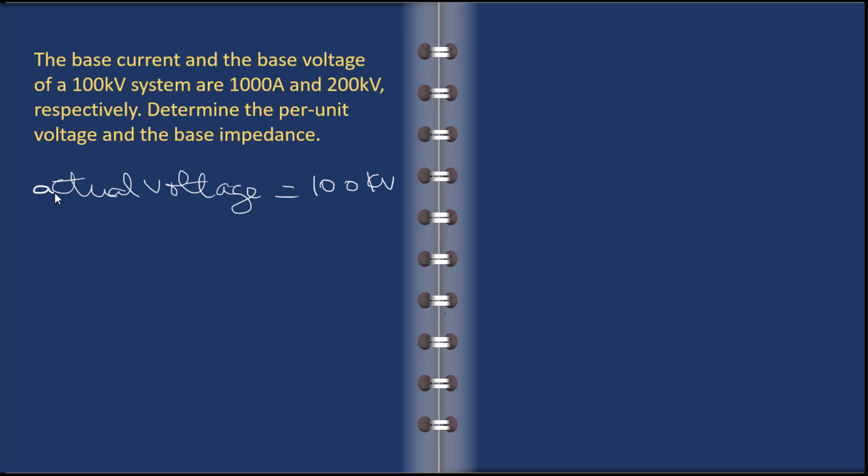That's given over here. 1000 amp is the base current, so we can put here I_base is 1000 amp. And what is 200 kV? That's the base voltage, so we can put V_base.